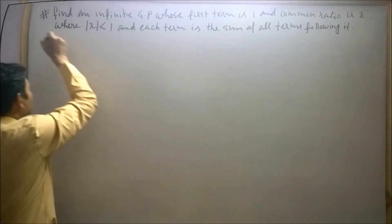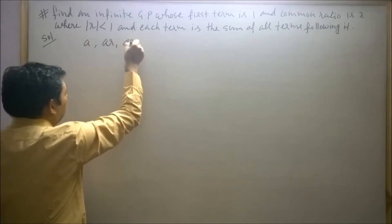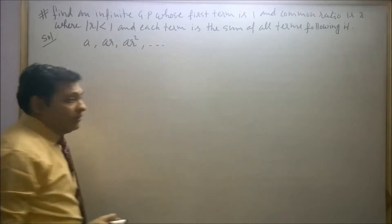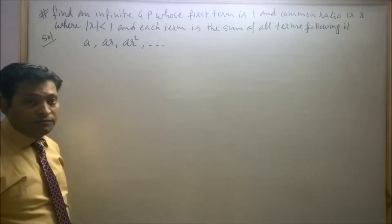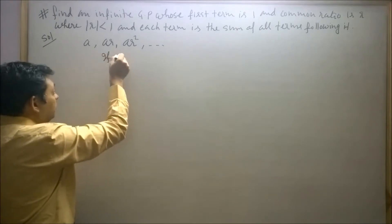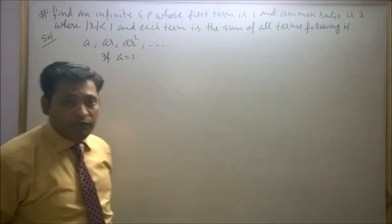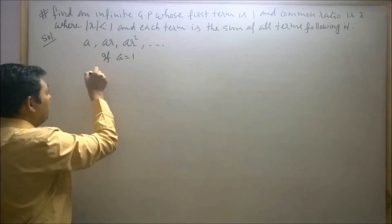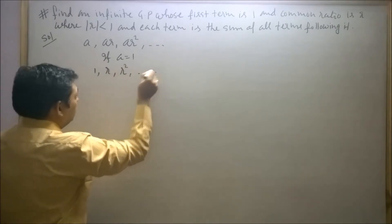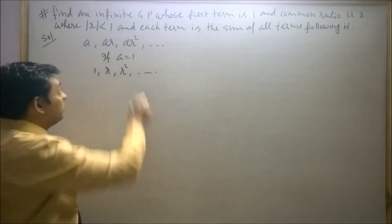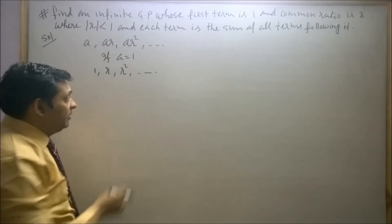So student, A, AR, AR square and so on, where R is the common ratio and A is its first term. Let if A equals to one, then this sequence can be converted as one, R, R square and so on. Let's say this is our infinite GP which is to be found out, and it is given that each term is equal to the sum of other terms following it.